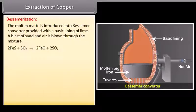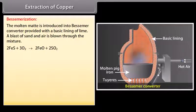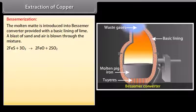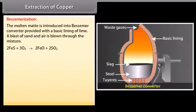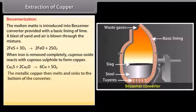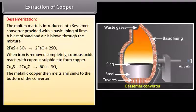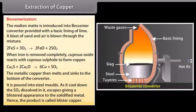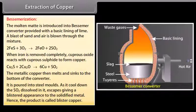Bessemerization. The molten matte is now introduced into Bessemer converter provided with a basic lining of lime. The blast of sand and air is blown through the mixture. FeO is removed as FeSiO3. When iron is removed completely, cuprous oxide reacts with cuprous sulfide to form copper. The metallic copper then melts and sinks to the bottom of the converter. It is poured into steel molds. As it cools down, the SO2 dissolved in it escapes giving a blistered appearance to the solidified metal. Hence, the product is called blister copper. It contains about 98% copper. Blister copper is refined electrolytically.